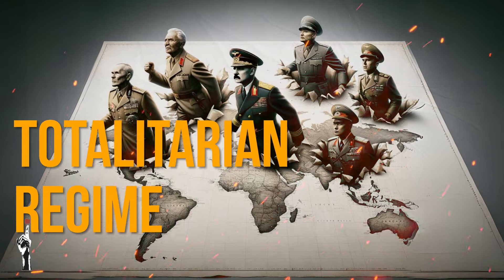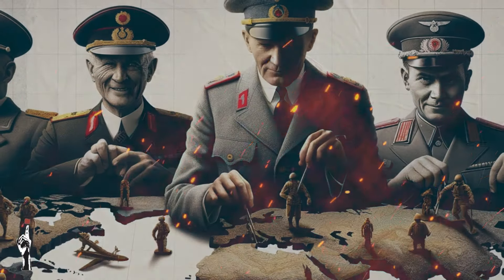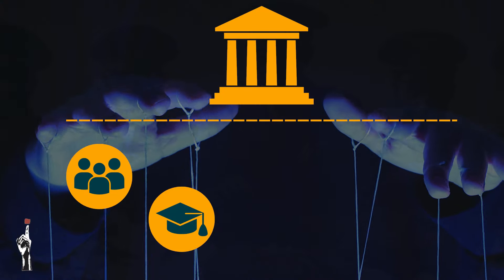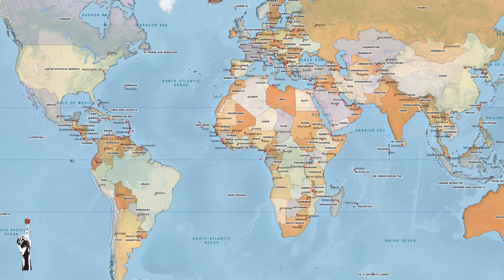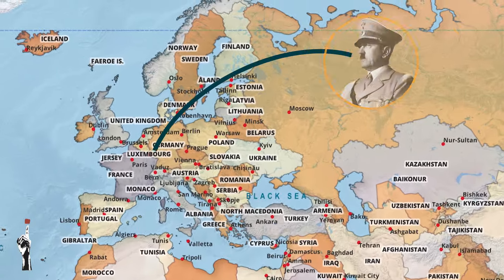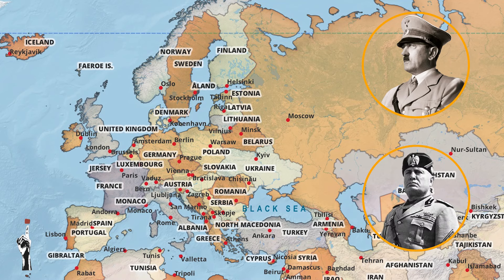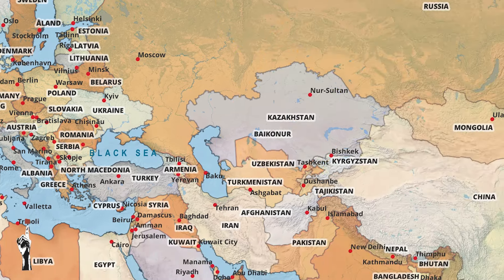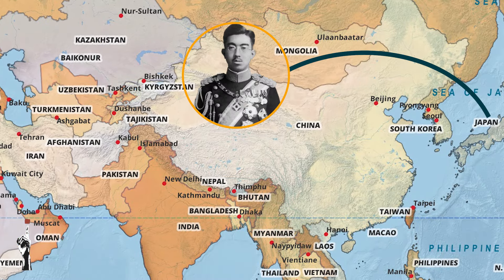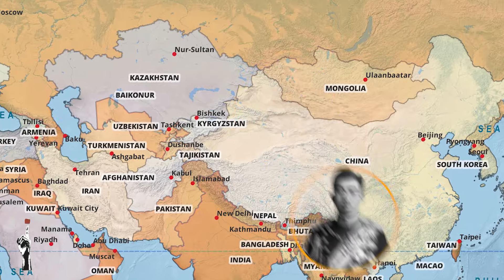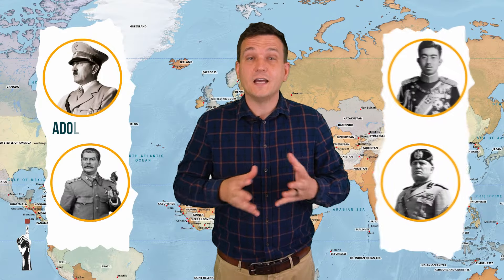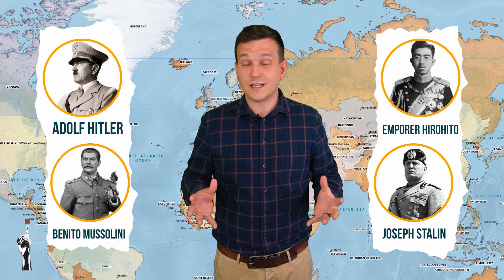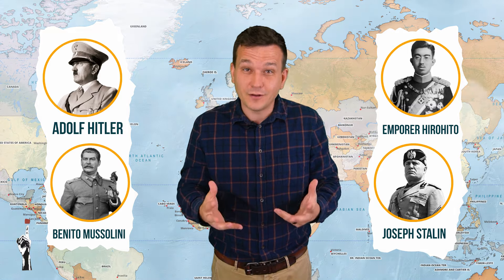A totalitarian regime is a type of government where one leader or party has complete control over all aspects of the country. After World War One we had the rise of Hitler in Germany, Benito Mussolini in Italy, military expansion under Emperor Hirohito in Japan, and Joseph Stalin in the Soviet Union. The world at this stage had a fair amount of dictators, and this is a recipe for trouble.